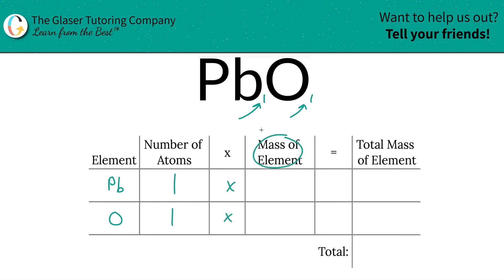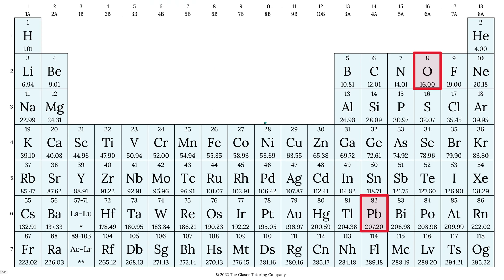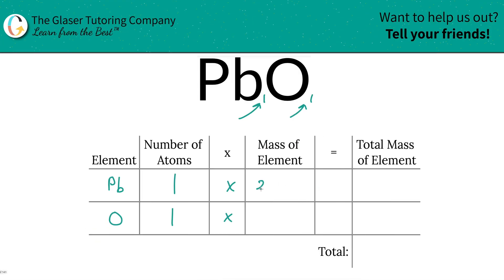Then we're going to simply multiply those number of atoms by the mass of each element. Take a look at the periodic table to help us out. So lead is going to be 207.2. Oxygen is 16. So that's what we're going to write in here.